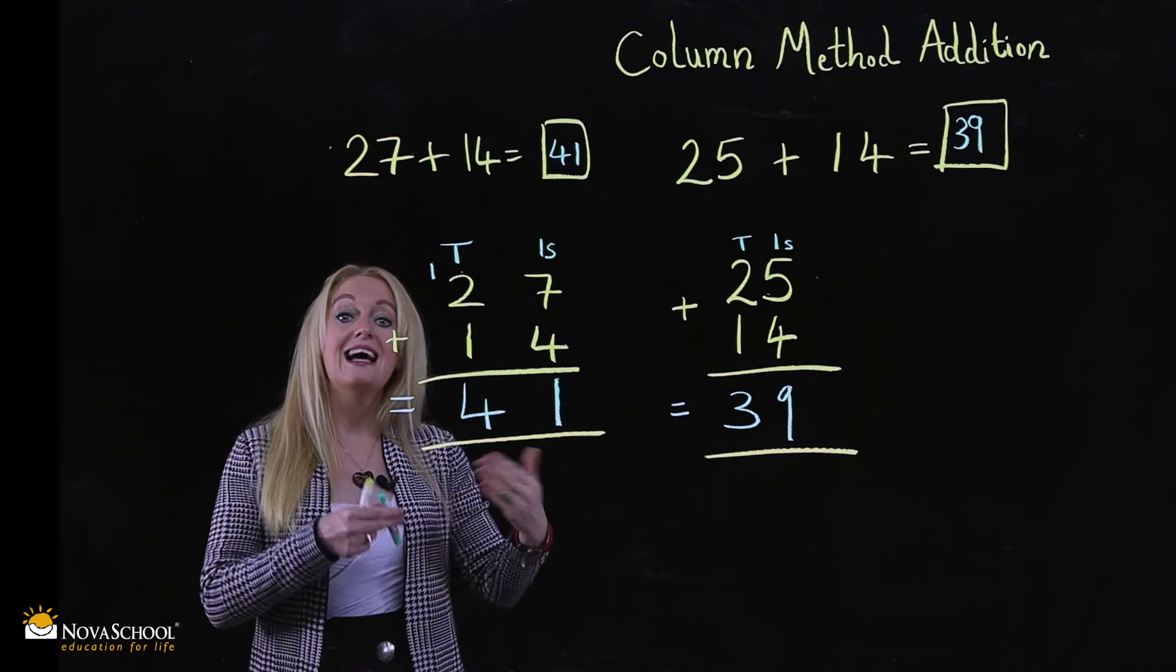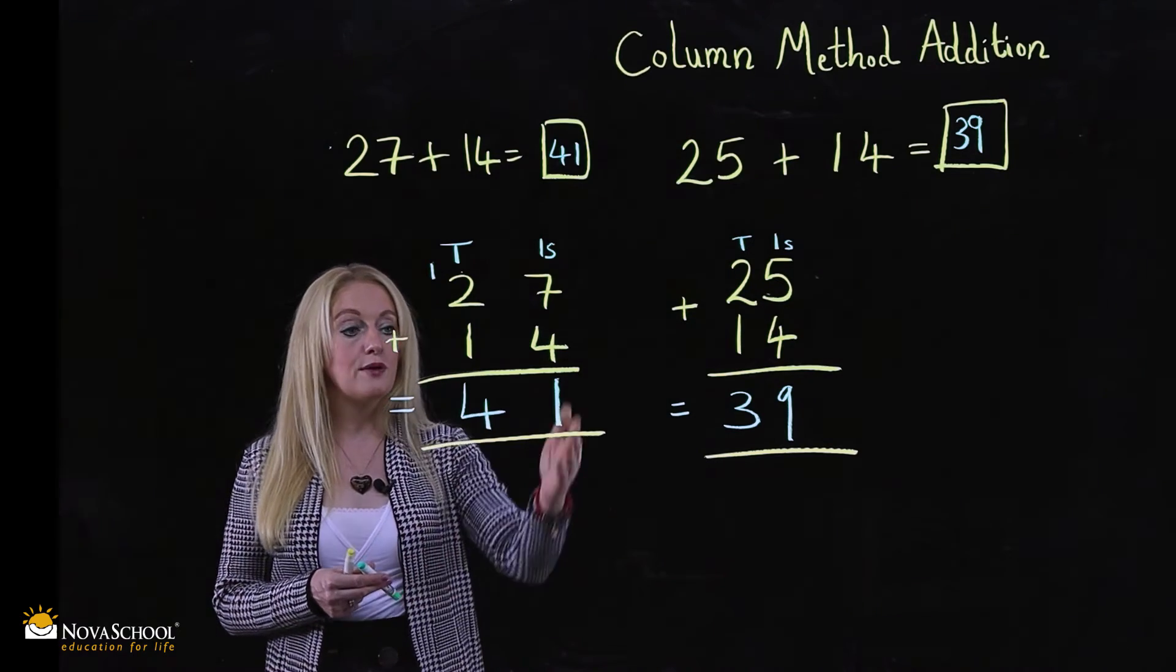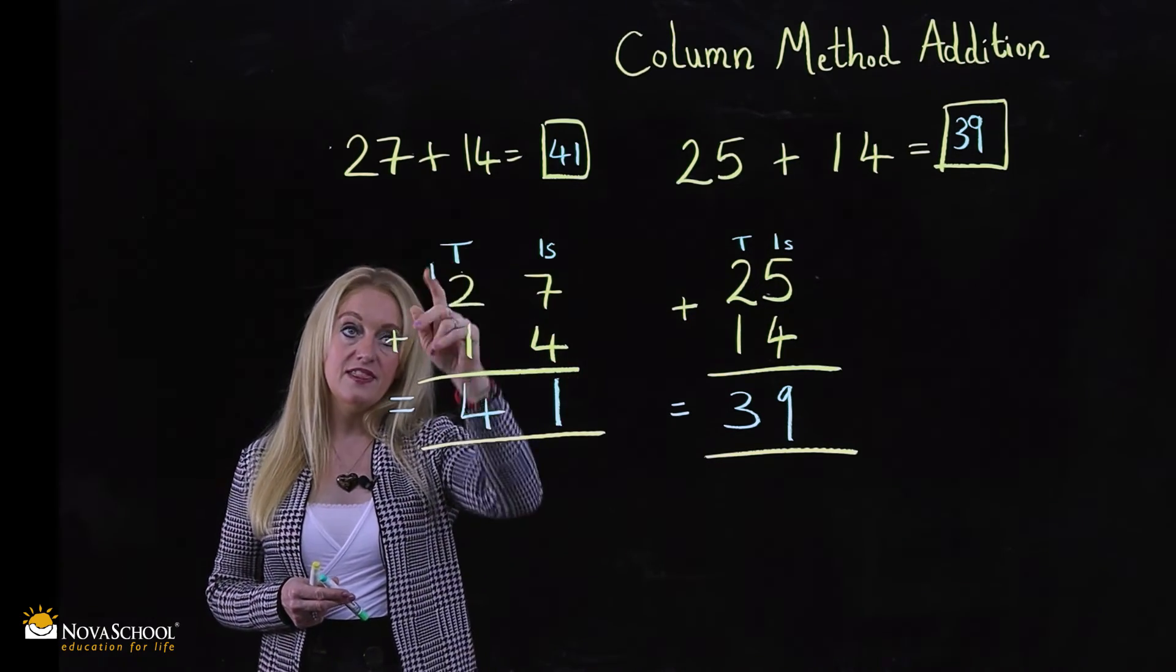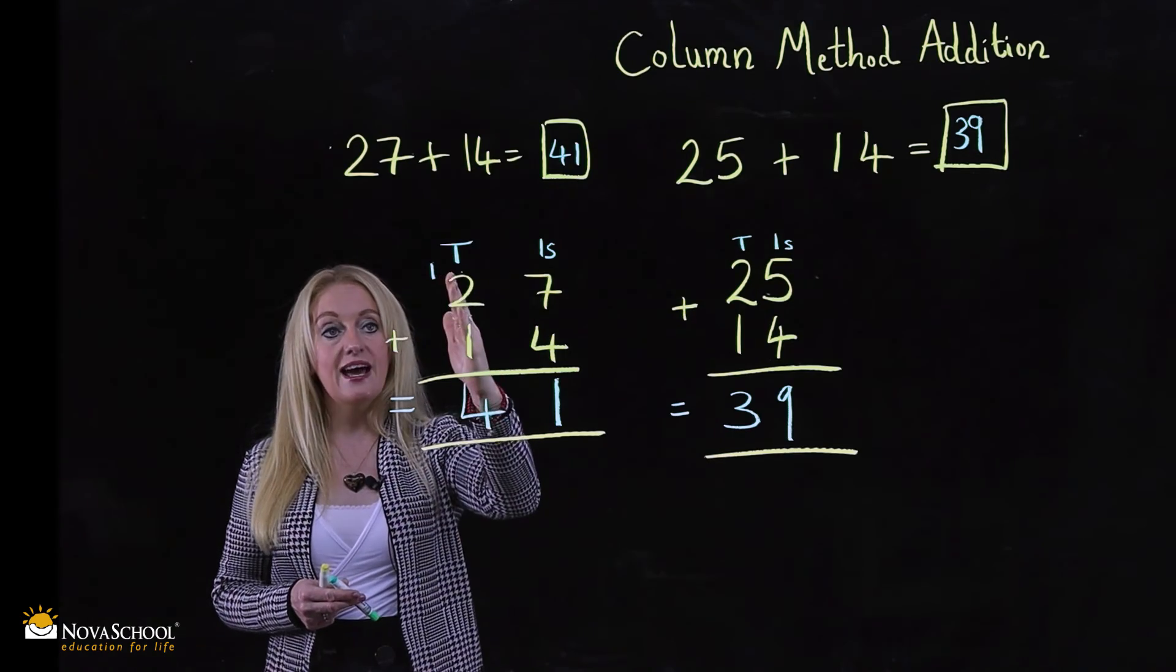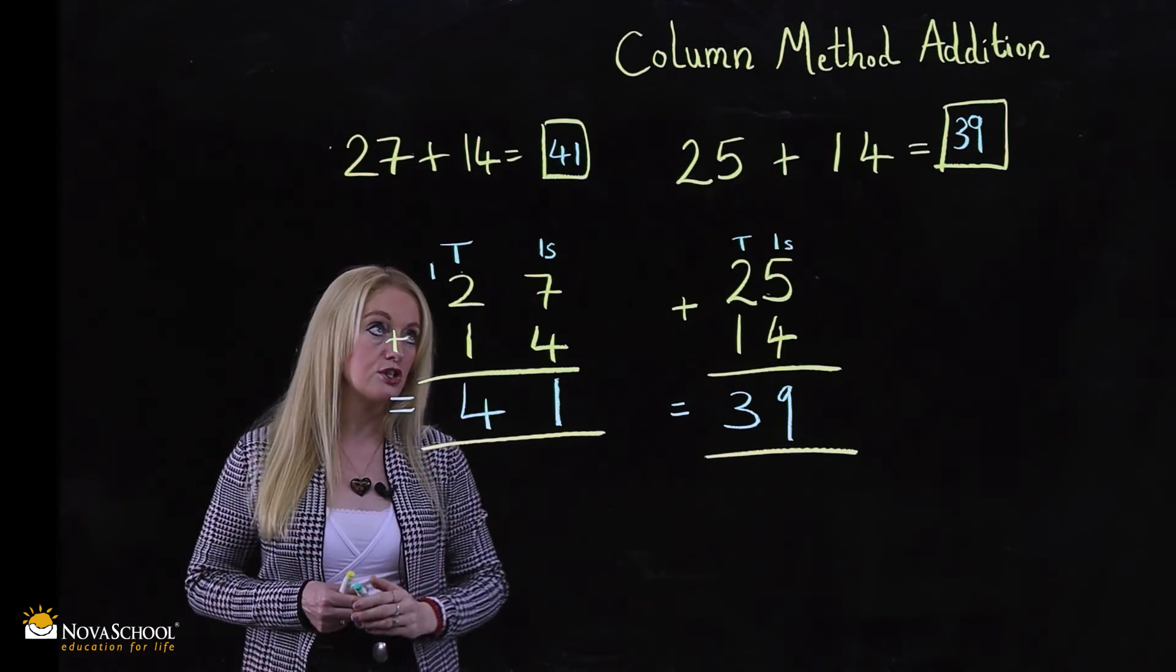So we have the seven add four, which made 11. So I've shown you how to place the one in the ones column and the 10 in the tens column to then add up to make the 41 as your final answer.